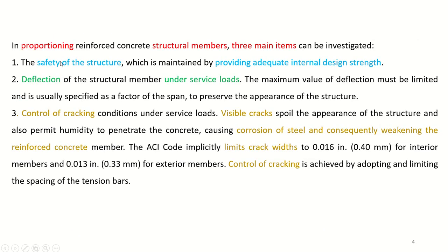In proportioning reinforced concrete structural members, three main items can be investigated. Number one: the safety of the structure, maintained by providing adequate internal design strength. Number two: the deflection of the structural member under service loads — the maximum value of deflection must be limited and is usually specified as a factor of the span to preserve the appearance of the structure.